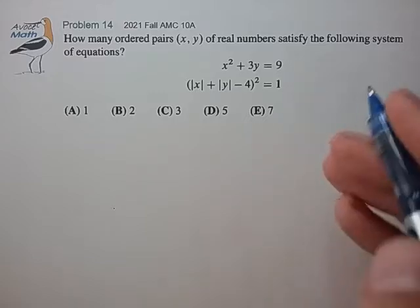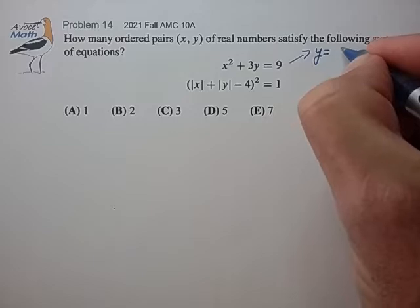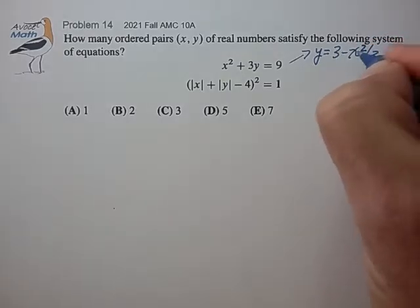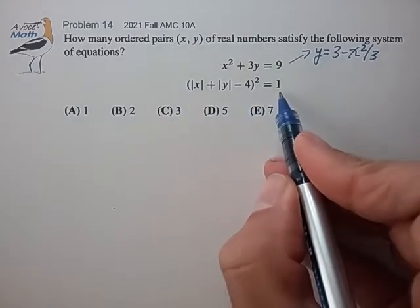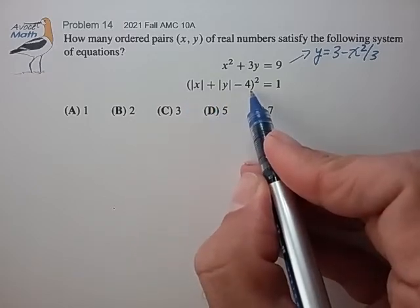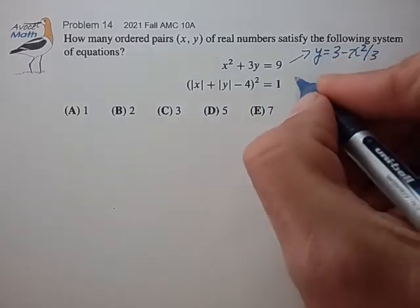Alright, so this first equation, if we isolate y, reduces to y equals 3 minus x squared over 3, so that's a simple parabola. This second equation is more complicated. The square equaling 1 means that the expression inside the brackets can equal plus 1 or minus 1, so this leads to two cases.